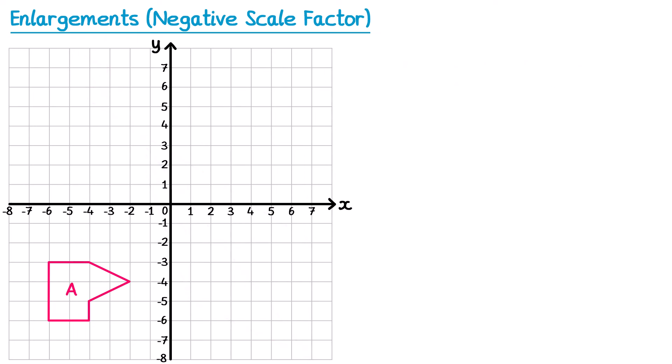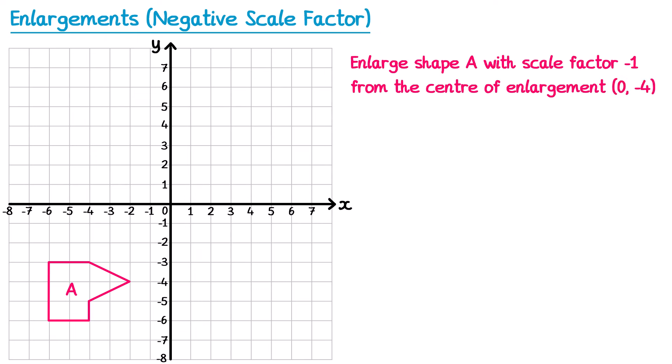Let's try a third example: enlarge the shape with scale factor negative 1 from center (0, -4). I mark on the center at (0, -4). Scale factor negative 1 might seem unusual — when we did positive enlargements, scale factor 1 just gives the same shape. But you may be asked to do one with scale factor negative 1. Starting with the first point, the journey from the center is 2 to the left, so we reverse to 2 to the right — done just one time since it's scale factor negative 1.